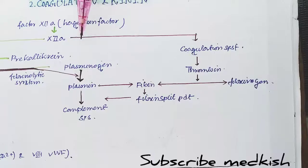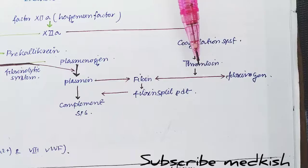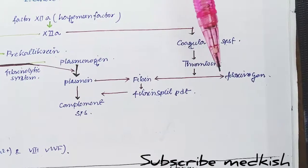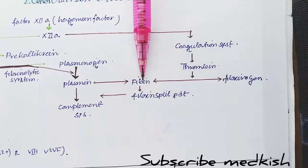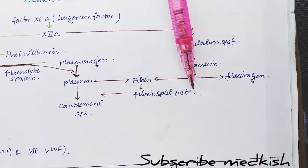Factor 12a will also enter the coagulation system, act on thrombin which converts fibrinogen to fibrin, and helps in formation of the fibrin split product.